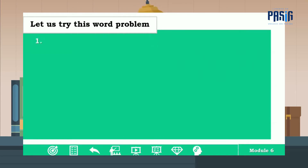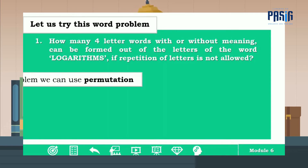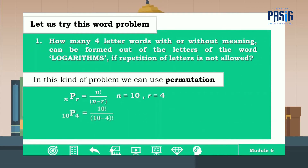Let us try this word problem. Number one: how many four-letter words, with or without meaning, can be formed out of the letters of the word LOGARITHMS if repetition of letters is not allowed? We use the permutation formula: P(n, r) = n! / (n − r)!. With n = 10 and r = 4, we get P(10, 4) = 10! / (10 − 4)! = 5,040 letter words.